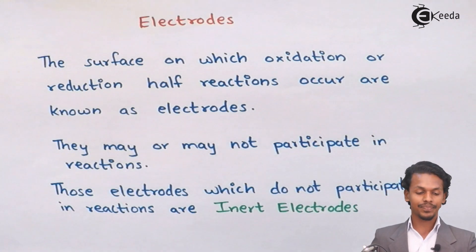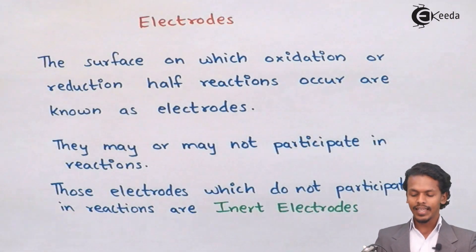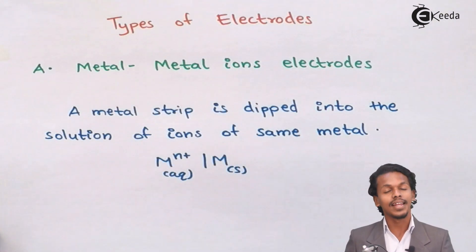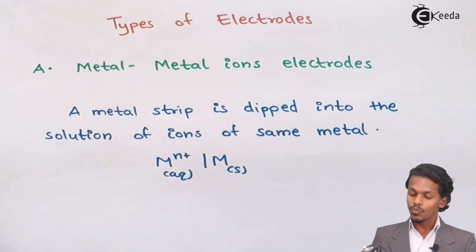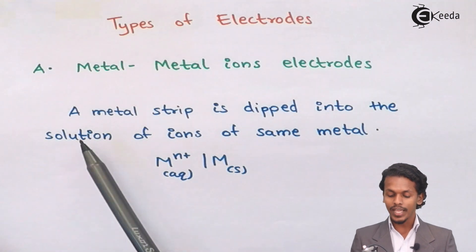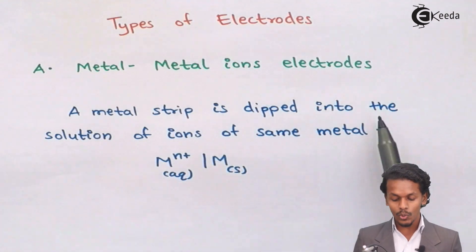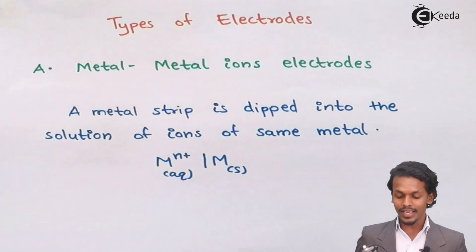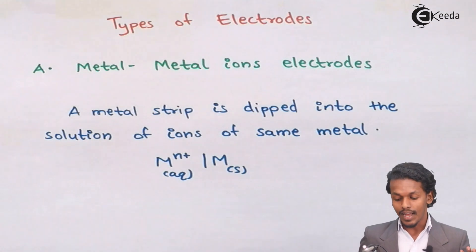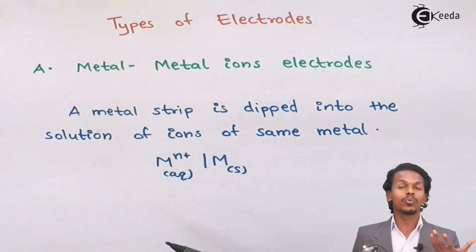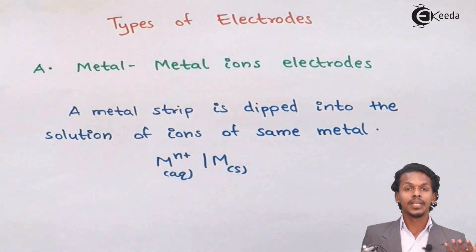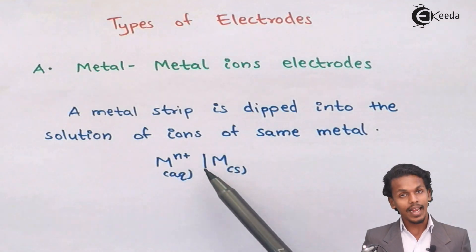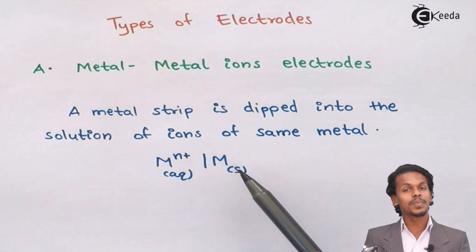The first type is the metal-metal ion electrode. A metal strip which is dipped into a solution of the ions of the same metal is said to be a metal-metal ion electrode. The general formula to denote this kind of electrode is M^n+ with a vertical line followed by M, where M is present in solid form.